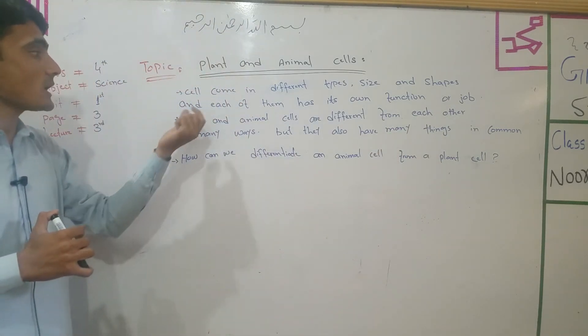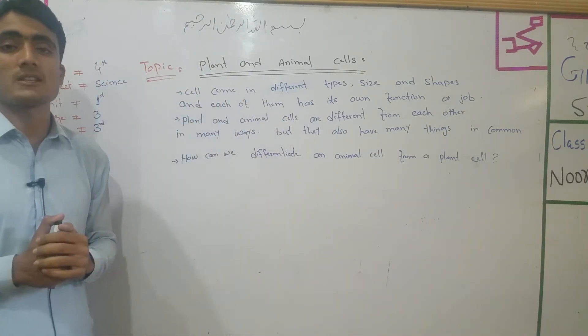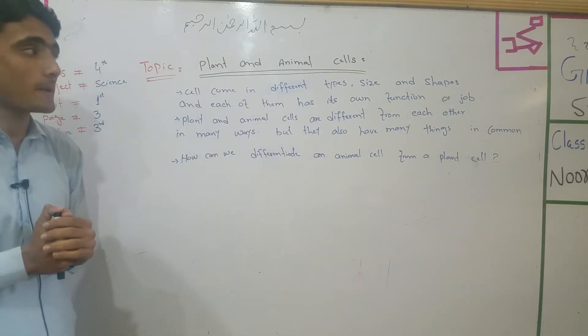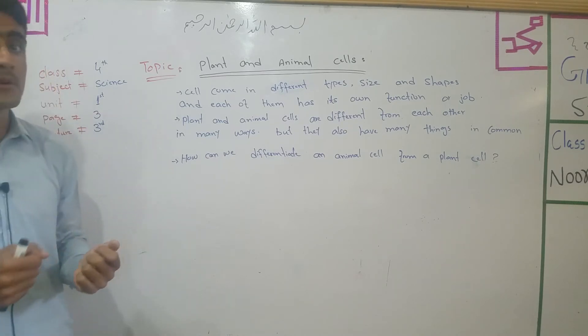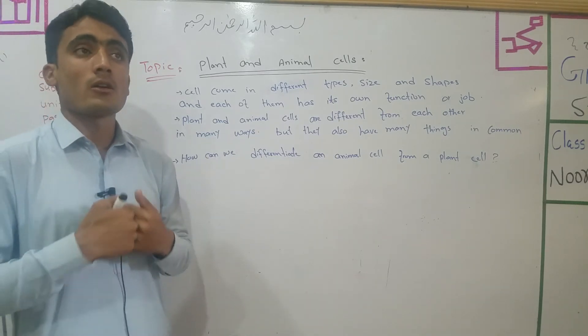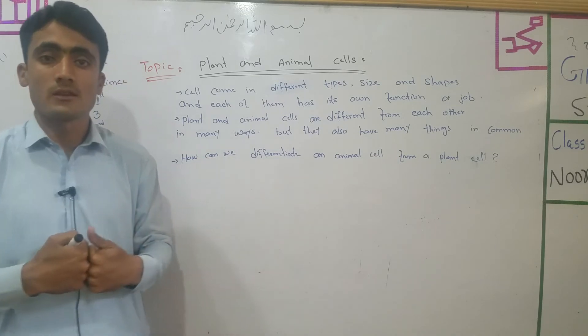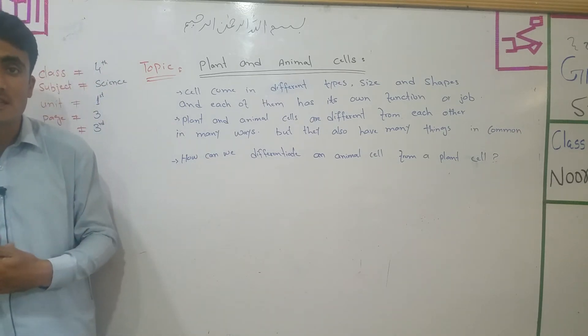Humans have a multicellular organism. For example, humans have reproduction of the cells and excretion of the cells.